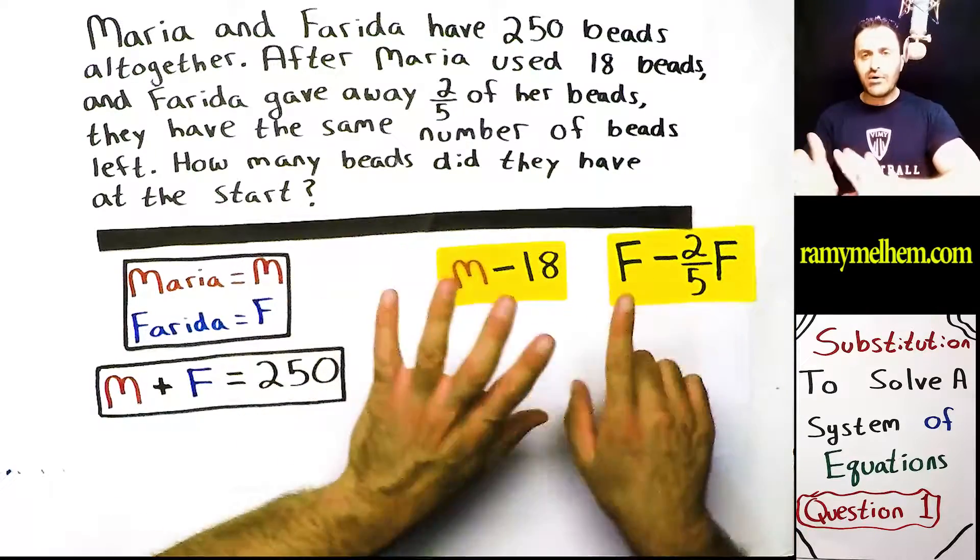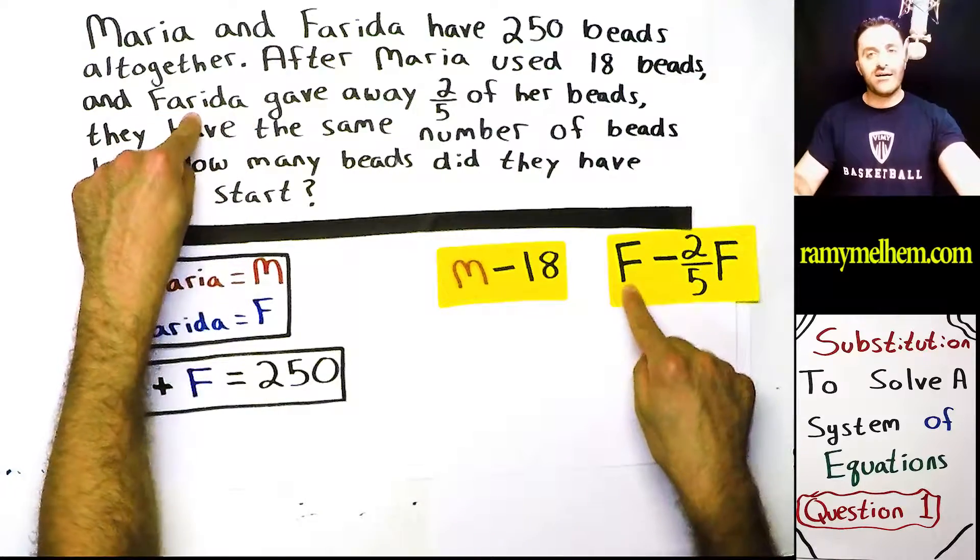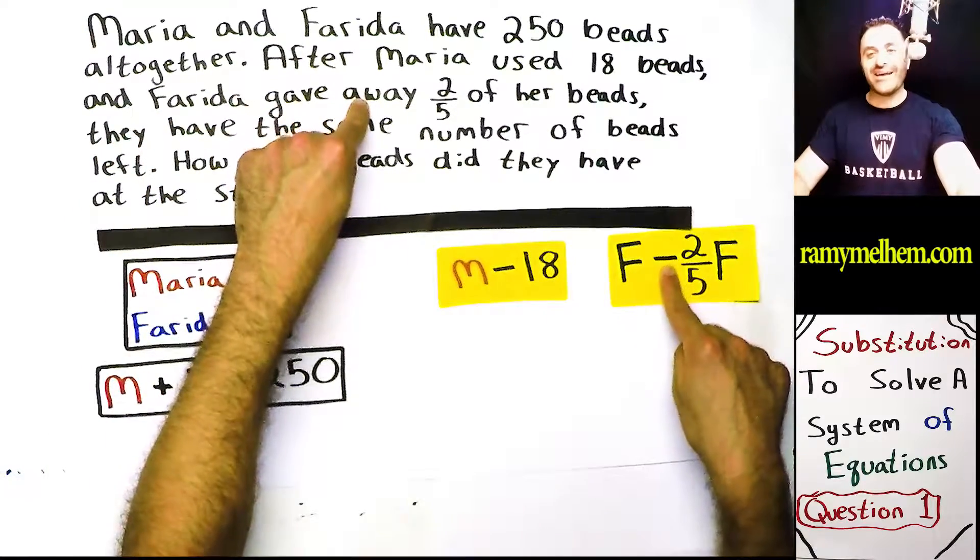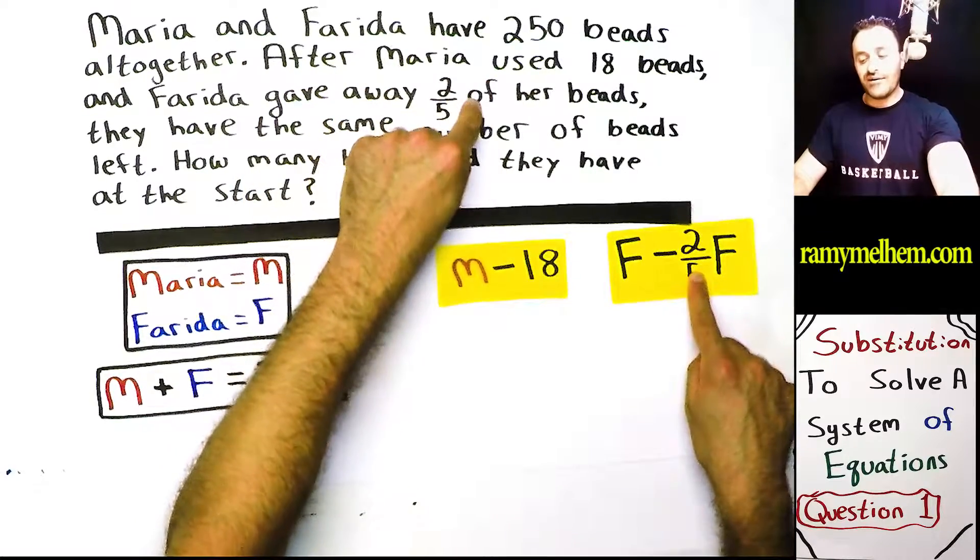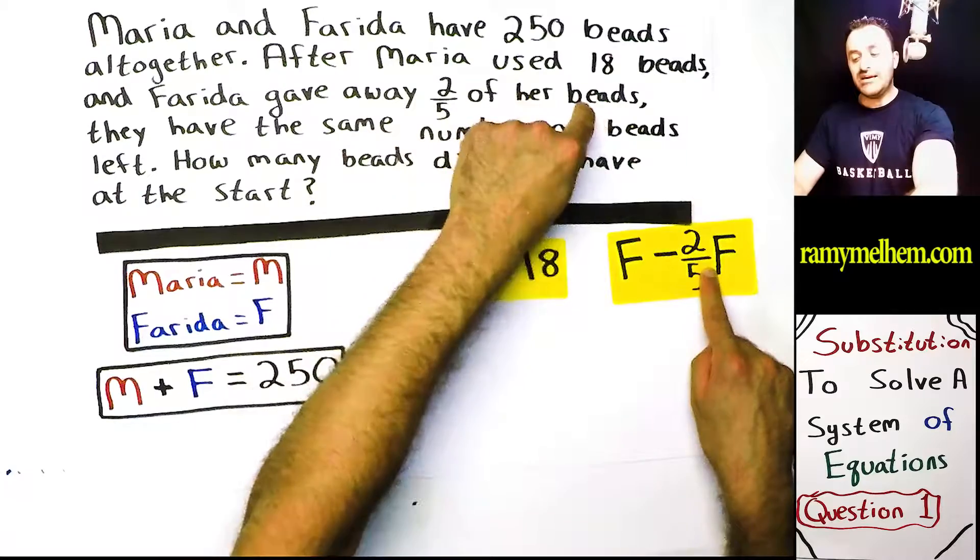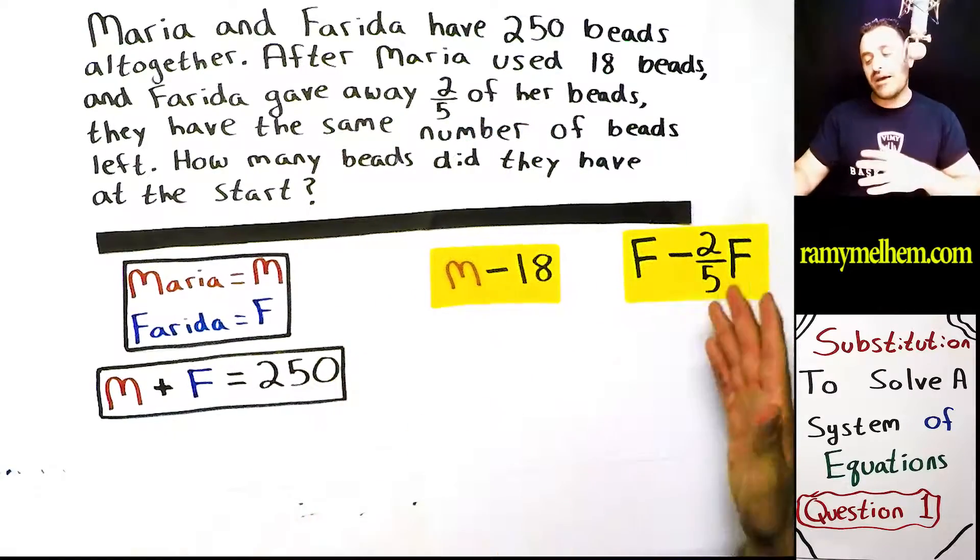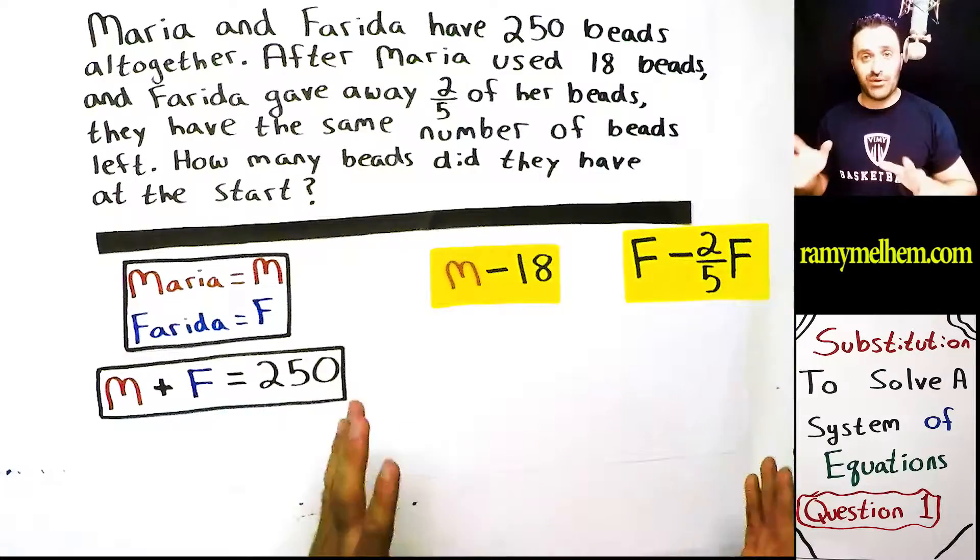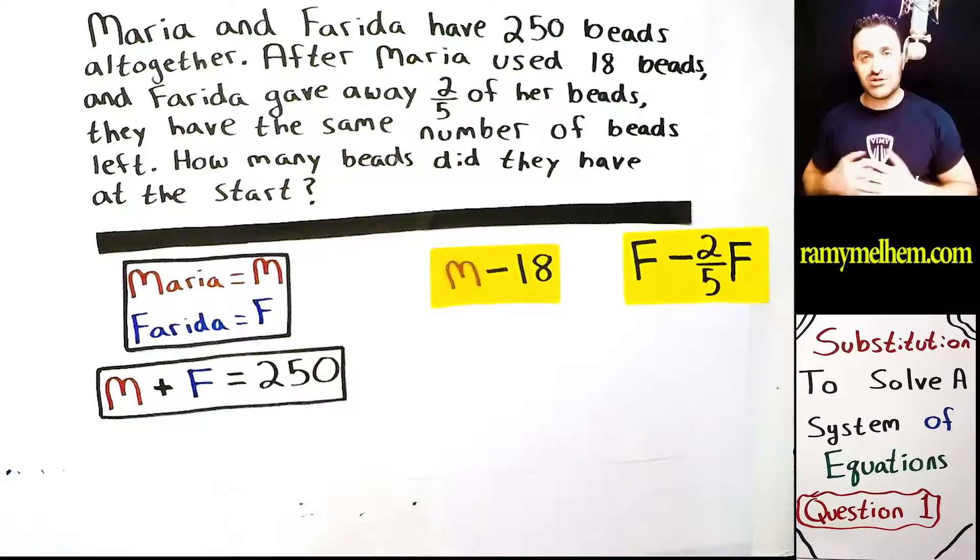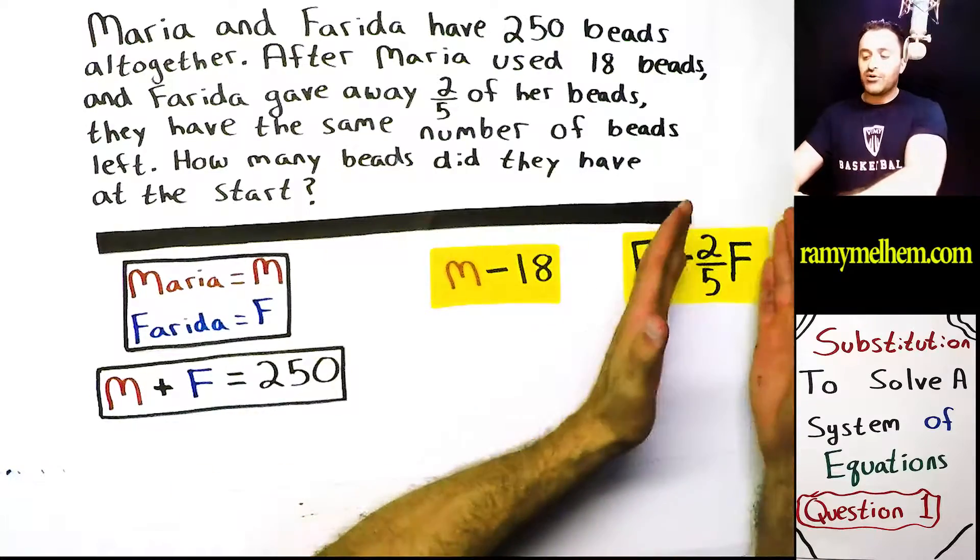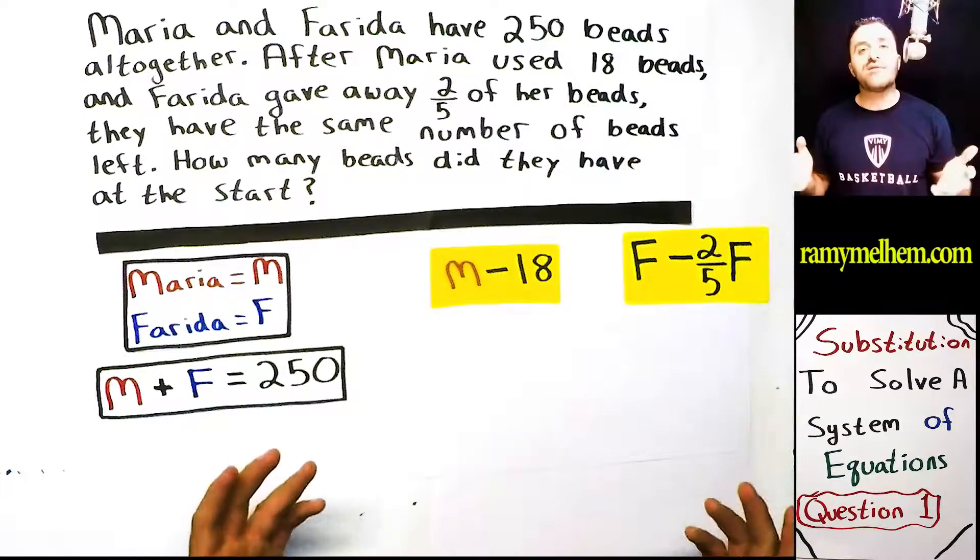It says Farida. Look how it matches so beautifully. Farida, Farida. Farida gave away, gave away, subtract. Two-fifths, two-fifths of multiply her beads F. There we go. We built this part of the equation. Now you may wonder here. I hope you're not because you should know this. But if you don't, I'll review it. You may be wondering where's the multiplication sign? We don't use them anymore, guys. You just put them side by side. It means they're being multiplied.